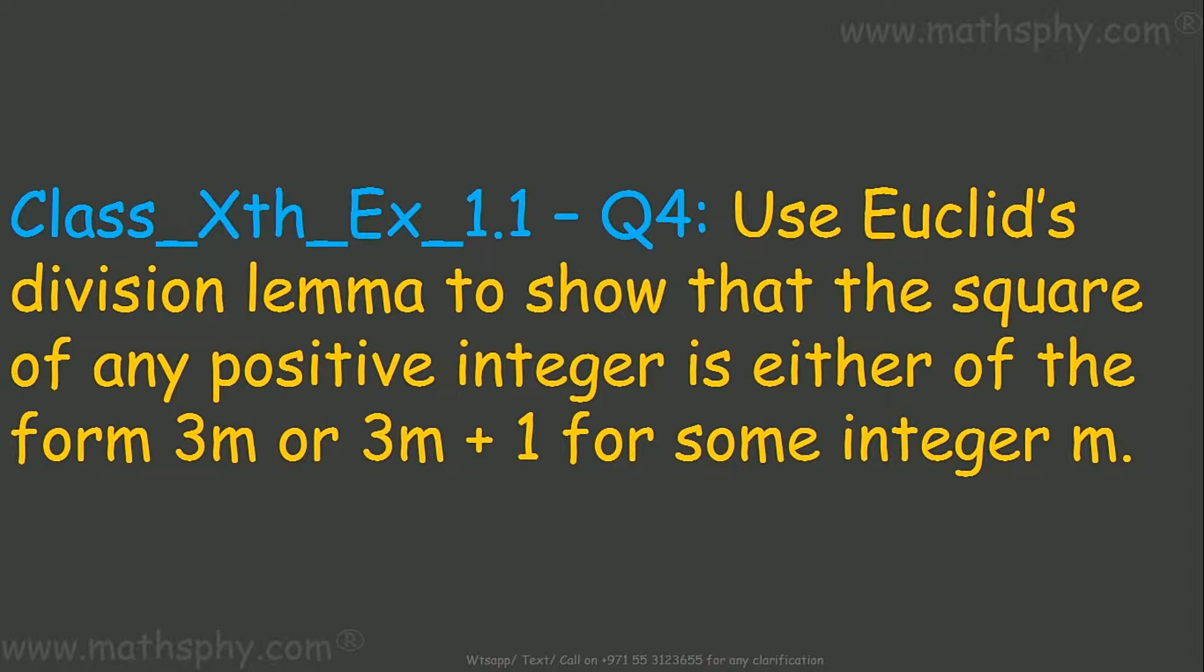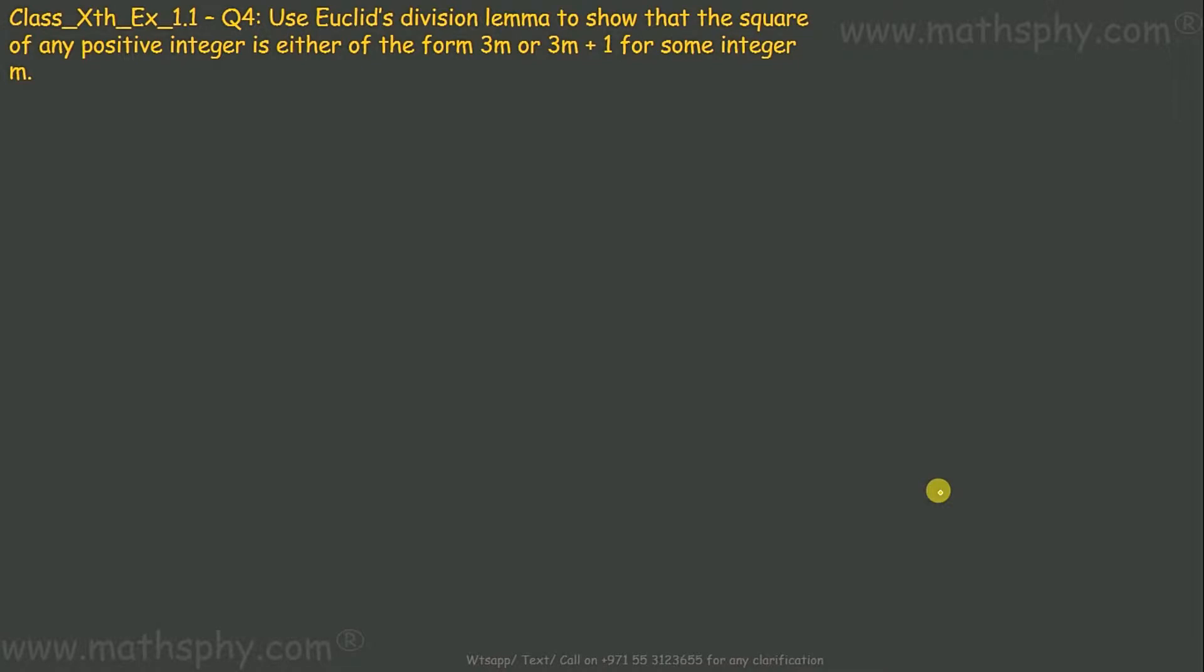We have to take the square of any positive integer and show that it can be written in the form of 3m or 3m plus 1. Let's take that positive integer as A. So B would be 3 since we have to put it in the form of 3m or 3m plus 1.